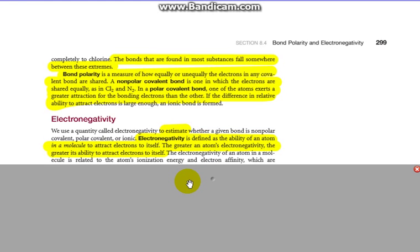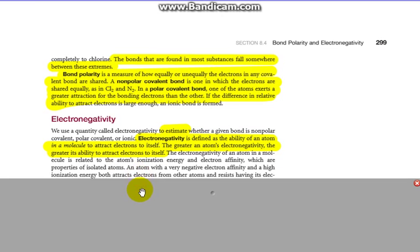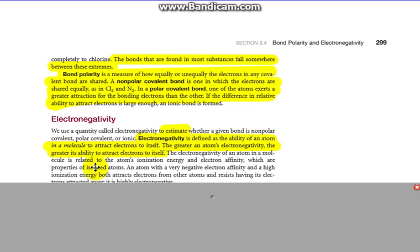Electronegativity is what we're going to use to determine whether a molecule is polar or not, and the degree of polarity. We're going to use that to estimate whether a bond is non-polar covalent, polar covalent, or ionic. Electronegativity is defined as the ability of an atom in a molecule to attract electrons to itself. The electronegativity of an atom in a molecule is related to the atom's ionization energy and electron affinity, but here we're talking about in molecules.